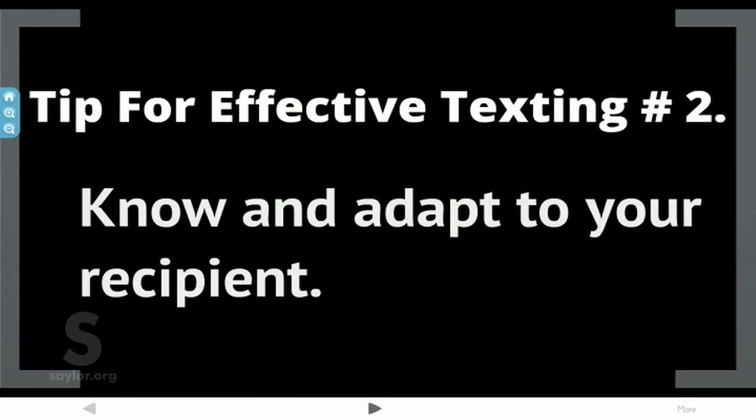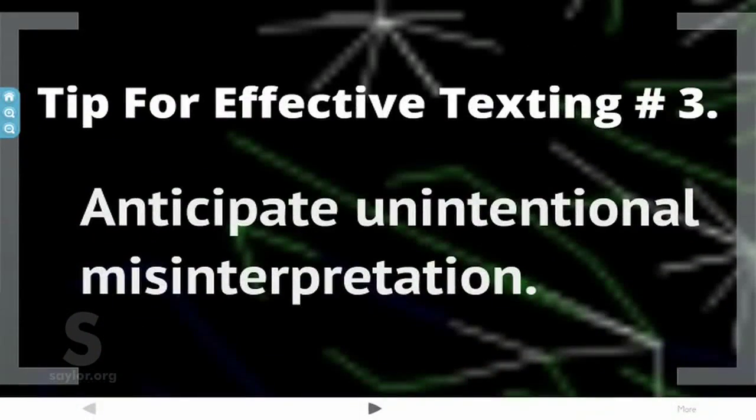Tip for effective texting number two: know and adapt to your recipient. As in all communication, adaptation and knowing your audience is extremely important so that you can craft your message appropriately. Tip number three: anticipate unintentional misinterpretation. Due to the brevity of text messages, misinterpretation is bound to happen.